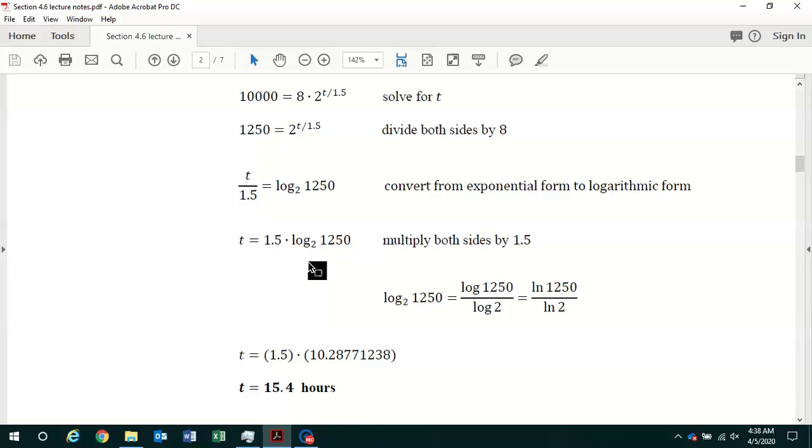If you don't have the software, then you've got to do the change of base formula. Log base 2 of 1,250 equals the common log of 1,250 divided by the common log of 2, or using the natural log, the natural log of 1,250 divided by the natural log of 2. Its value is equal to 10.28771238. And when you multiply that by 1.5, the time for the bacteria to grow to 10,000 is equal to 15.4 hours.